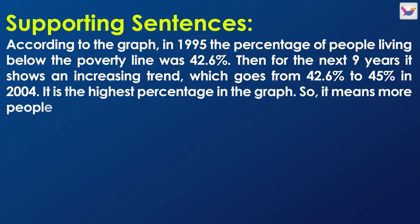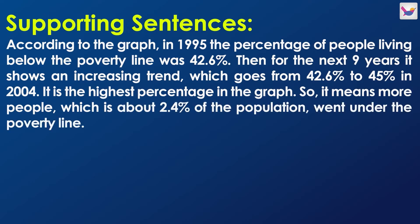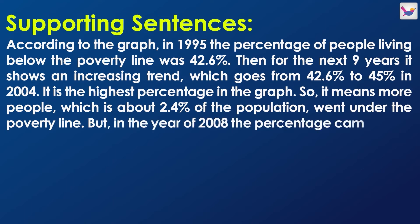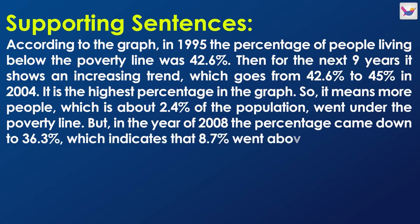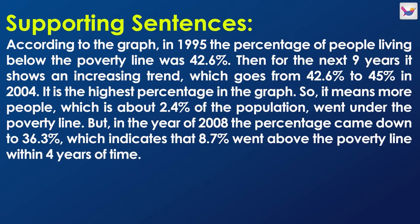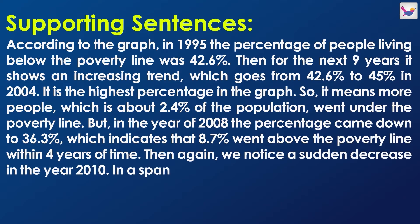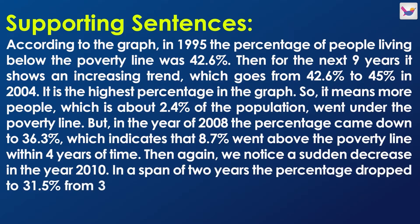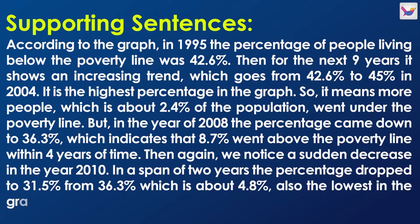This means more people — about 2.4% of the population — went under the poverty line. But in 2008, the percentage came down to 36.3%, which indicates that 8.7% went above the poverty line within four years. Then we notice a sudden decrease in 2010; in a span of two years, the percentage dropped from 36.3% to 31.5%, which is a decrease of 4.8%, and also the lowest in the graph.